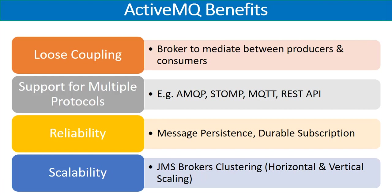The third benefit is reliability, which is one of the major positive features of ActiveMQ. At the broker level, you achieve reliability in two ways: you can have a cluster of brokers in fault-tolerance or load-balancing mode for horizontal scaling, and message persistence provides another layer of reliability. With persistence set to true, messages are stored in persistent storage, so even if a single broker goes down, messages will still be there when it comes back up.